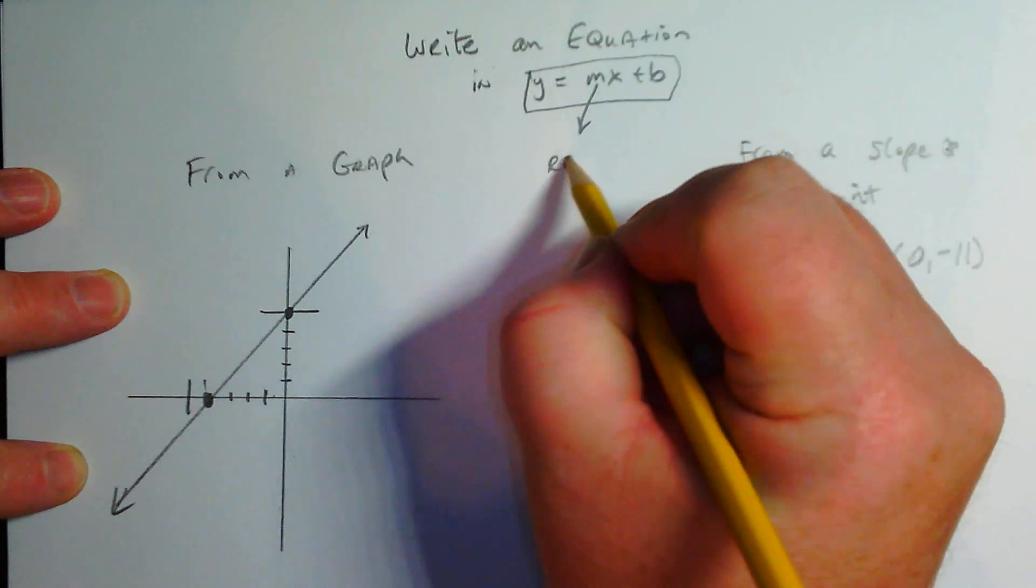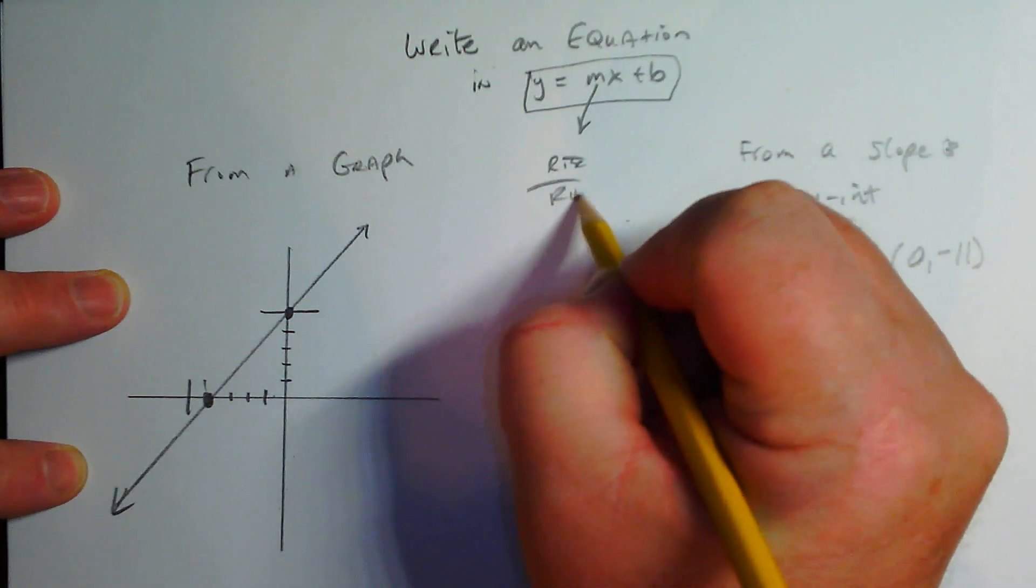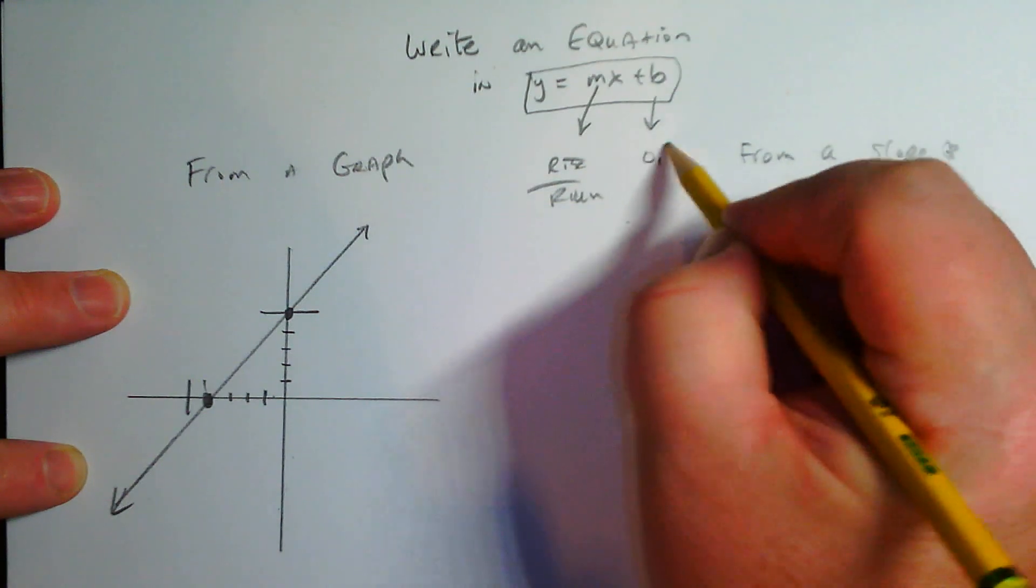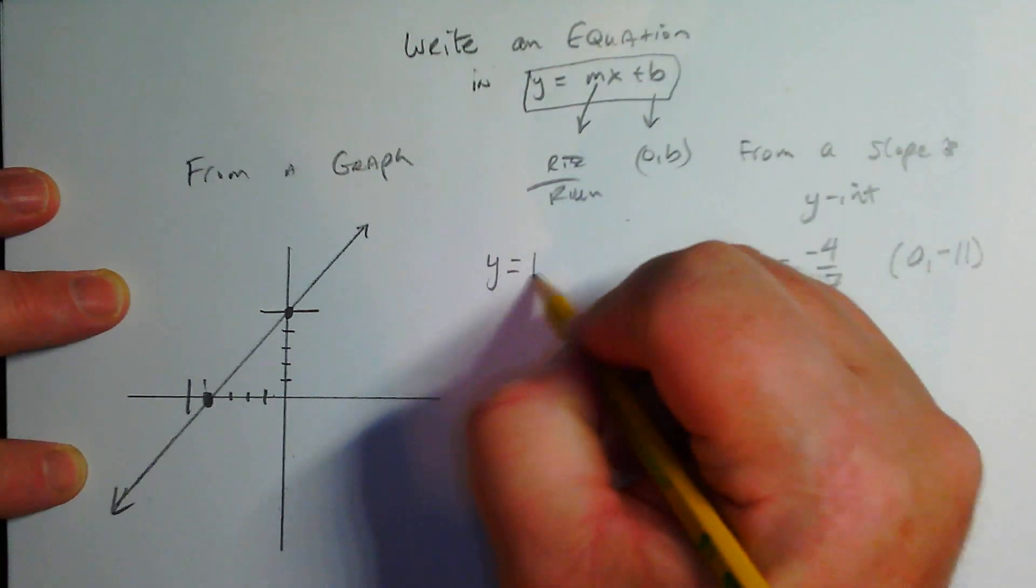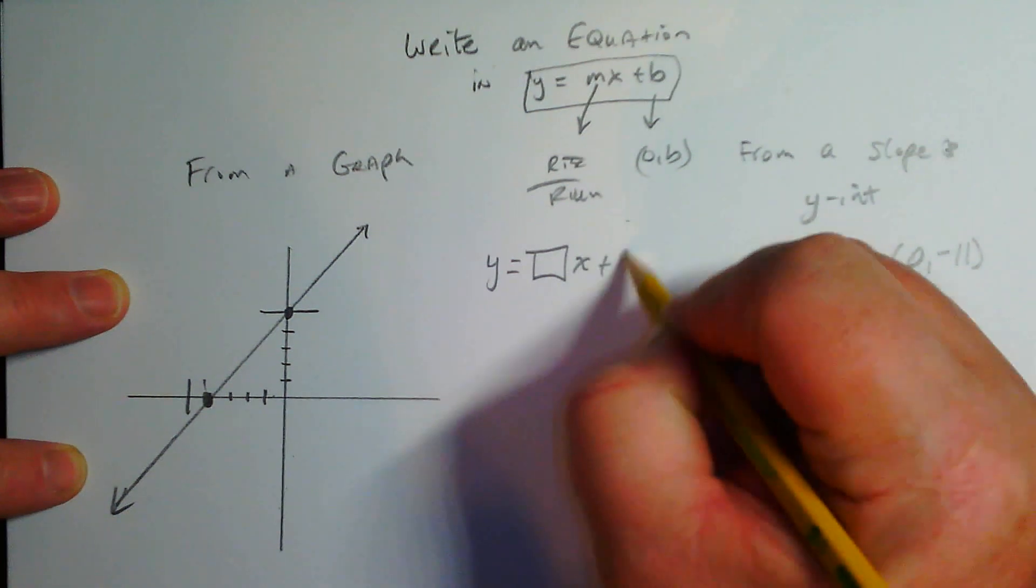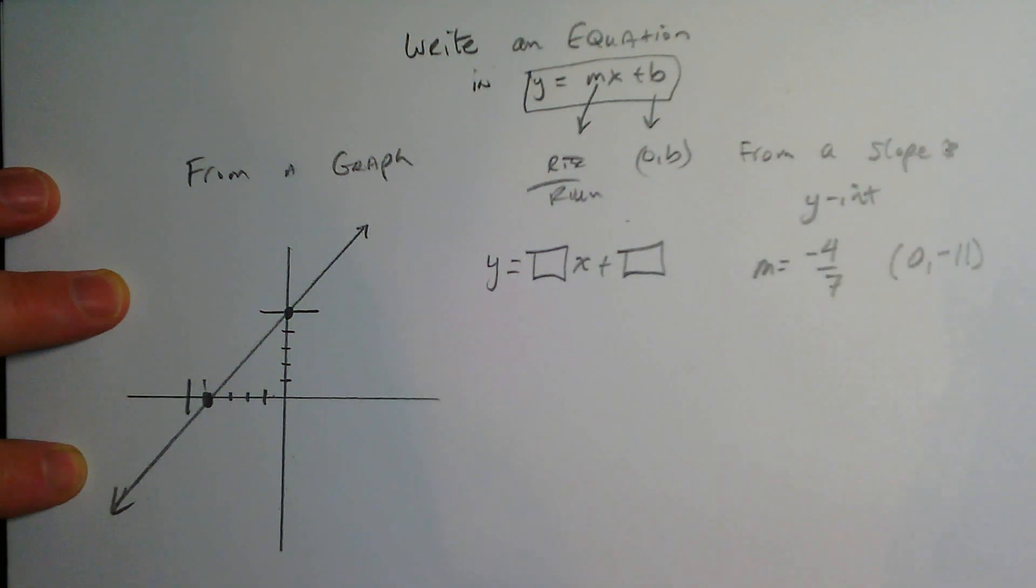That's your slope, which is rise over run, and that's your y-intercept (0, b). So your idea is you need to figure out what is m and you got to figure out what is b.